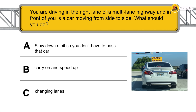You are driving in the right lane of a multi-lane highway and in front of you is a car moving from side to side. What should you do? You should slow down a bit so you don't have to pass that car.